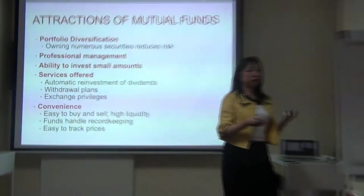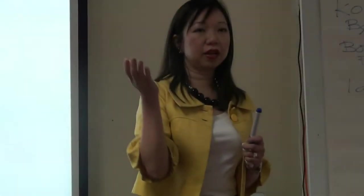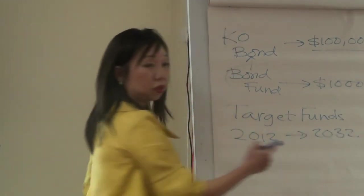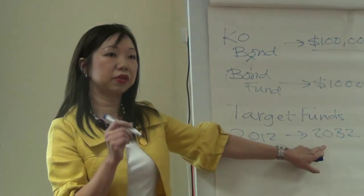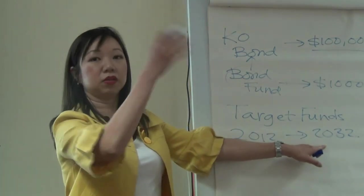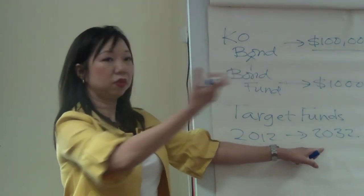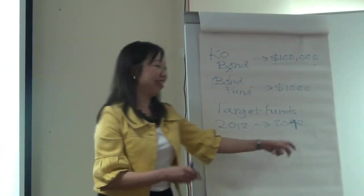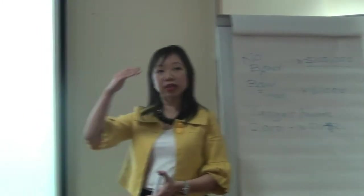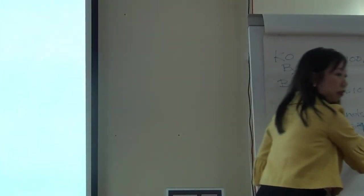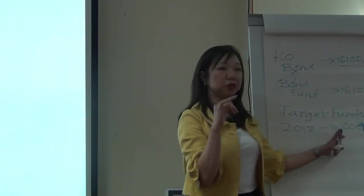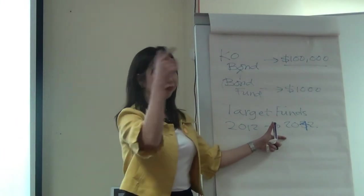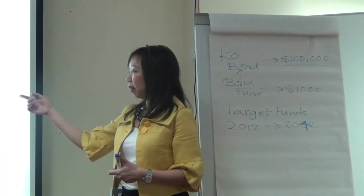Fund companies have become creative as the market gets more saturated. A target fund works like this: if you're 30 years old and plan to retire in 30 years — say in 2042 — you buy into a fund with a target payout date of 2042. You can also have targets not just for retirement but for your child's education — if your baby will enter university in 20 years, you can aim for a 20-year fund.